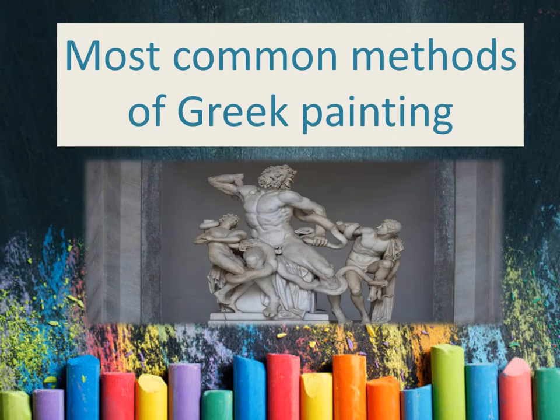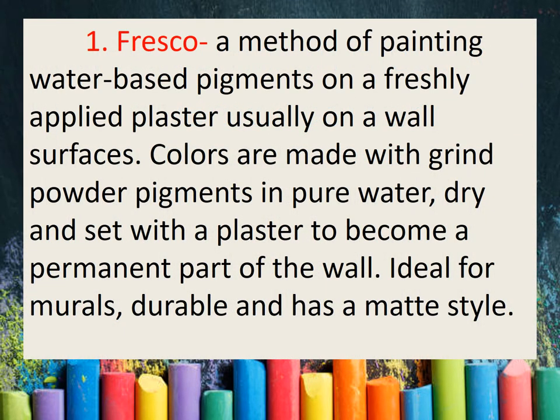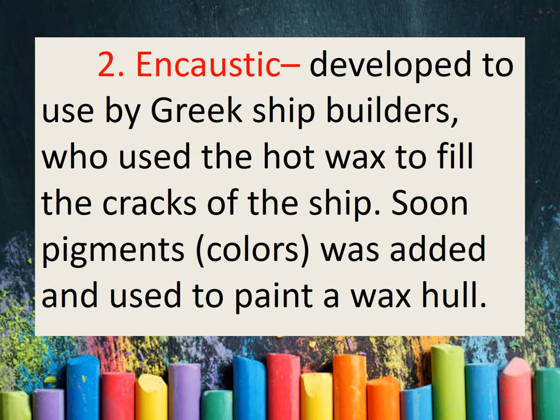Most Common Methods of Greek Painting: The first one is Fresco — a method of painting water-based pigments on freshly applied plaster, usually on wall surfaces. Colors are made with ground powder pigments in pure water, and dry and set with the plaster to become a permanent part of the wall. Ideal for murals, durable, and has a matte style. The next one is Encaustic, which was developed by Greek ship builders who used hot wax to fill the cracks of ships. Soon, pigments were added and used to paint on wax.